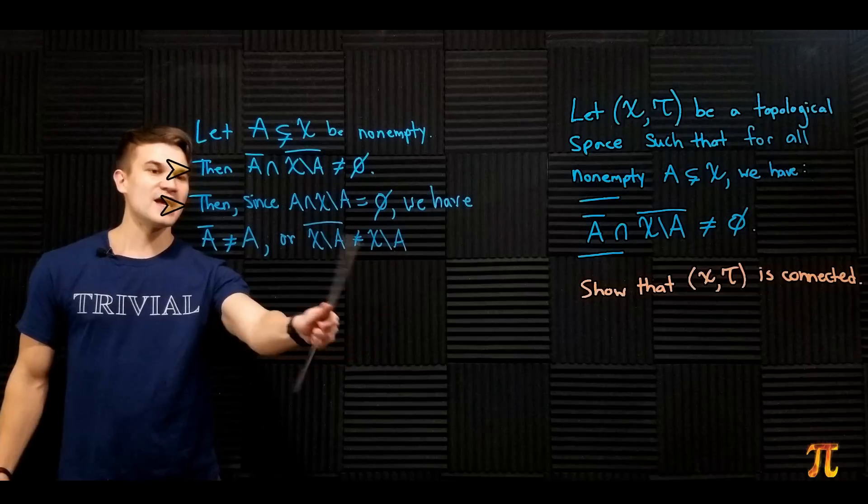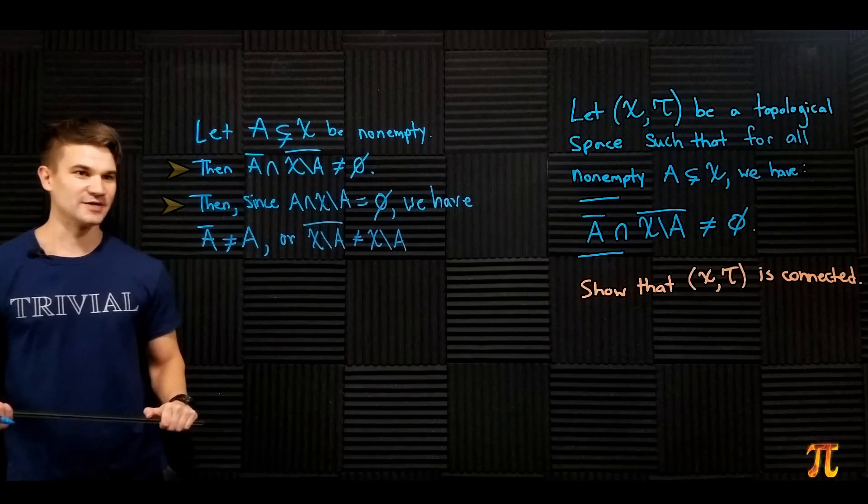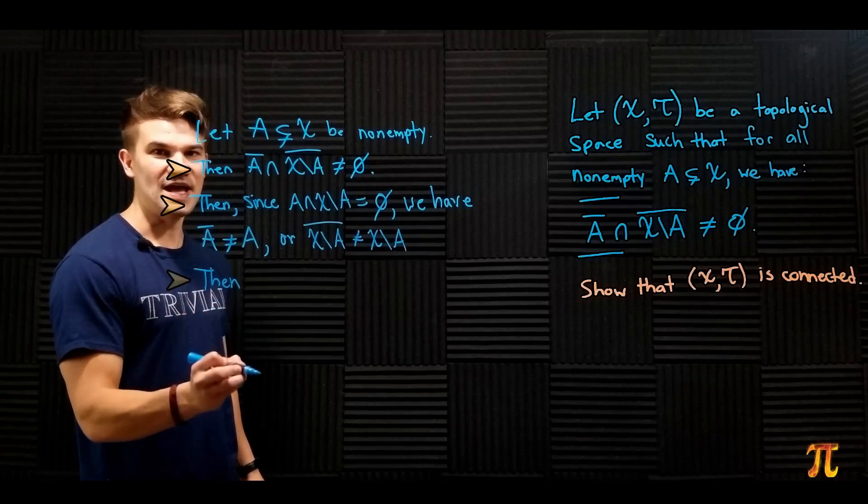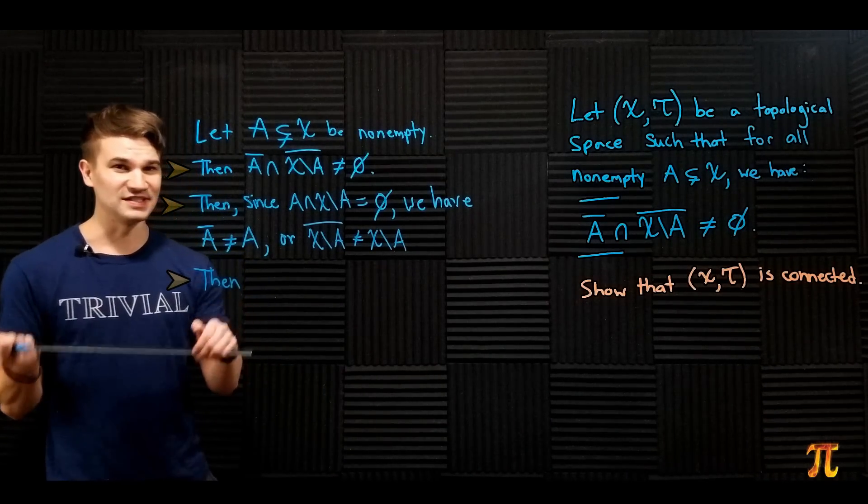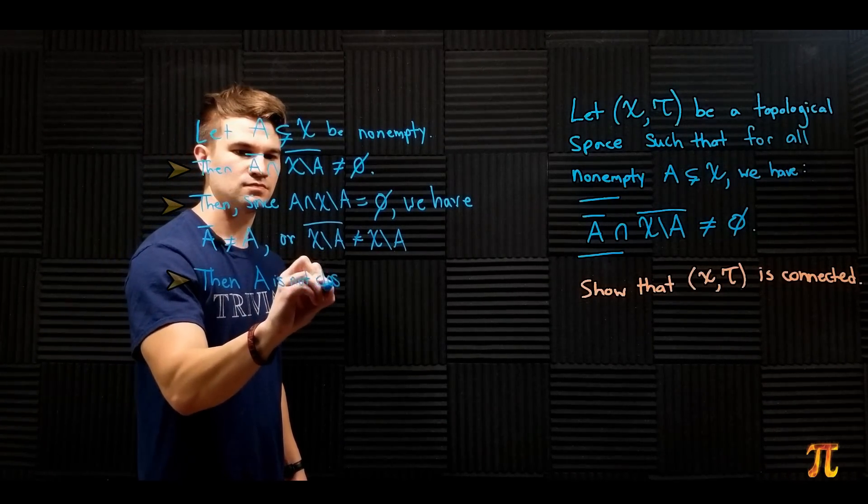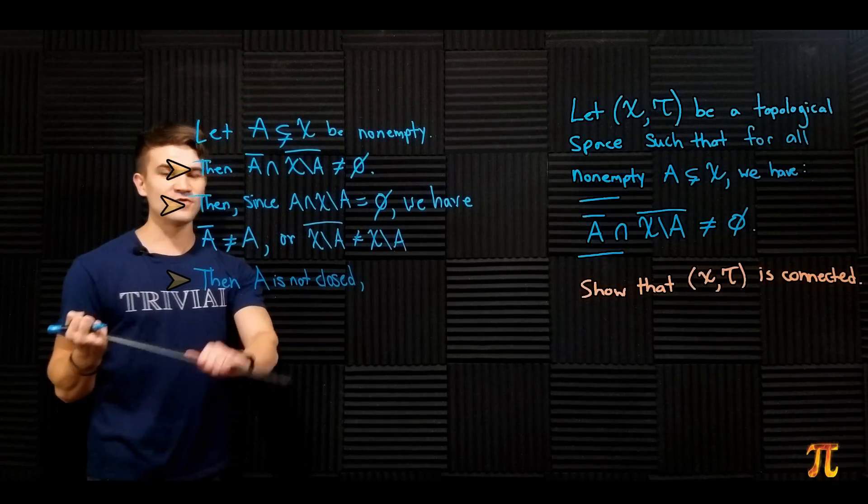That means either A is not closed (as a closed set is always equal to its closure), and the same for X \ A. Now look at this statement: X \ A is not closed. What's another way to say that?